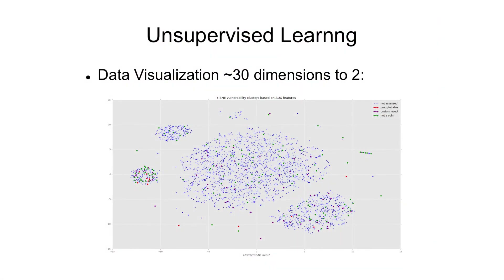Another example of unsupervised learning, for instance, is using it for data visualization — you can take something from 30 dimensions and reduce it to two dimensions so you can see and visualize it. But this is just a tangential use of this technique.